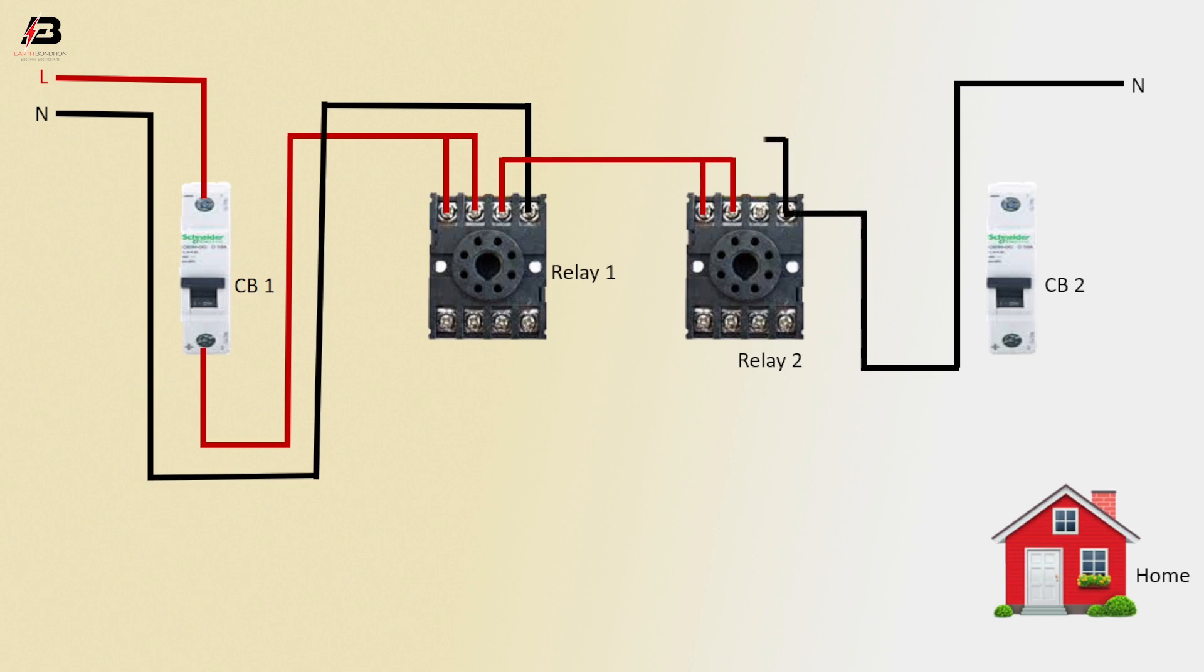Neutral Short In Relay 2, Phase Connection to Circuit Breaker 2, Phase Connection from Circuit Breaker 2 to Connect Relay 1, Phase Connection from Relay 1 to Home Load.